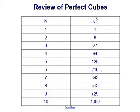6 cubed is 216, 7 cubed is 343, 8 cubed is 512, 9 cubed is 729, and 10 cubed is 1,000. We found those numbers by taking n and cubing it — multiplying that number by itself three times.